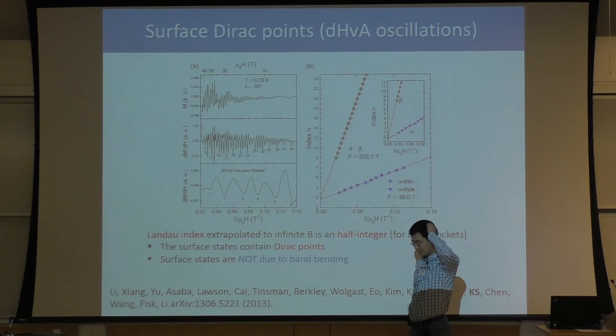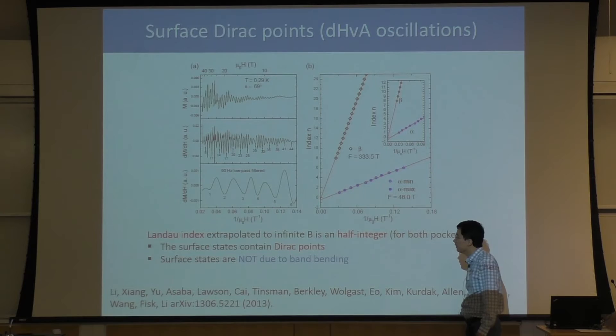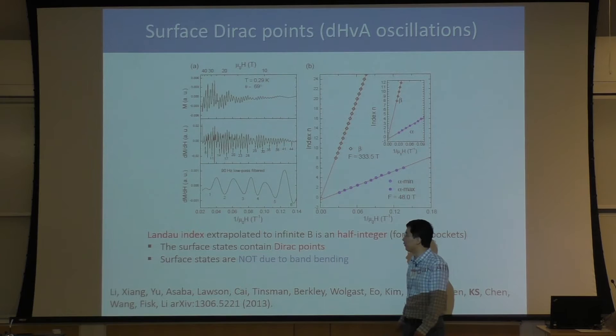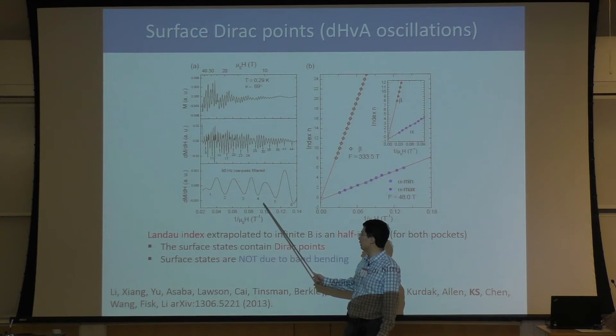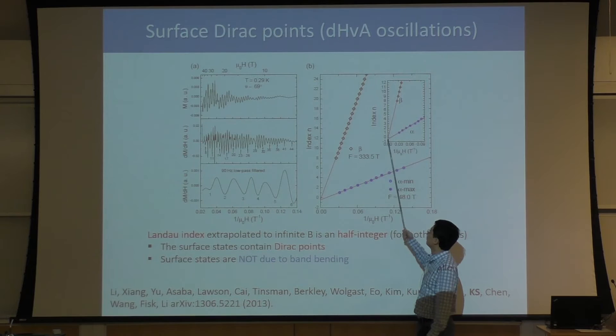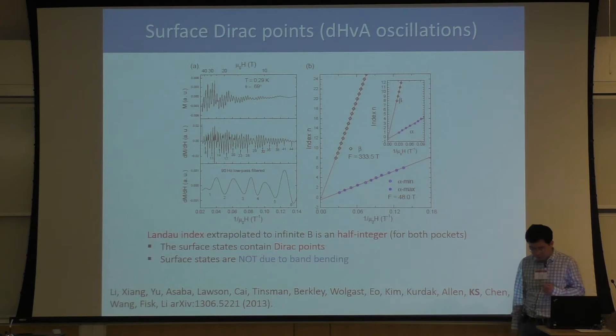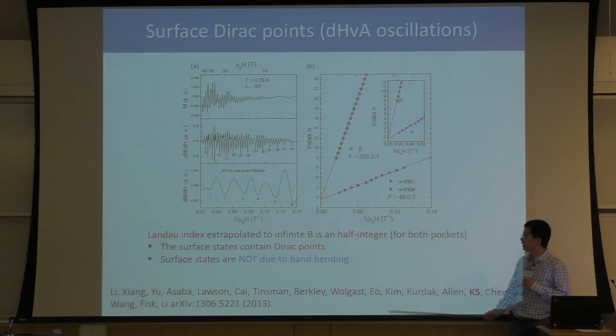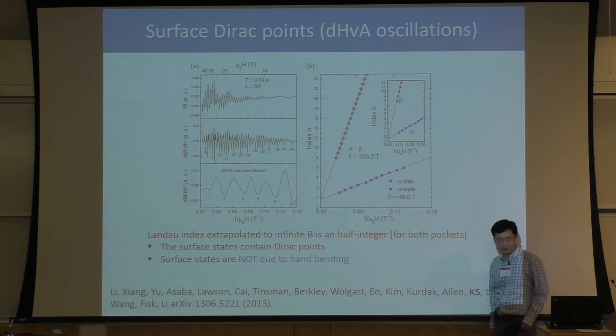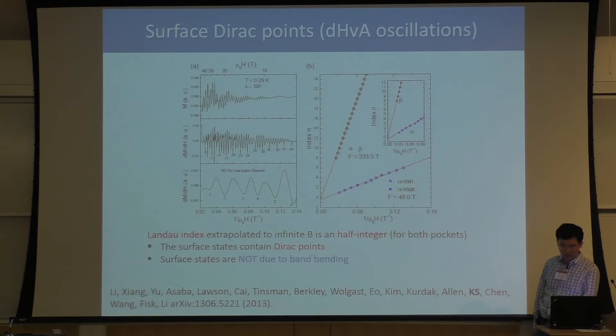He can also determine whether the Fermi surface comes from ordinary 2D electron gas or from Dirac cones. For a 2D electron gas, quantum oscillations come from the formation of Landau levels, and we can label each valley by a Landau level index. By extrapolating to infinite magnetic field, we get either an integer or a half integer. If it's an integer, it's an ordinary 2D electron gas; if it's half integer, it means it comes from Dirac cones, because Dirac cones have an additional pi Berry phase. In the experiments, all signals have a one-half intersection, meaning all the pockets observed come from Dirac cones.